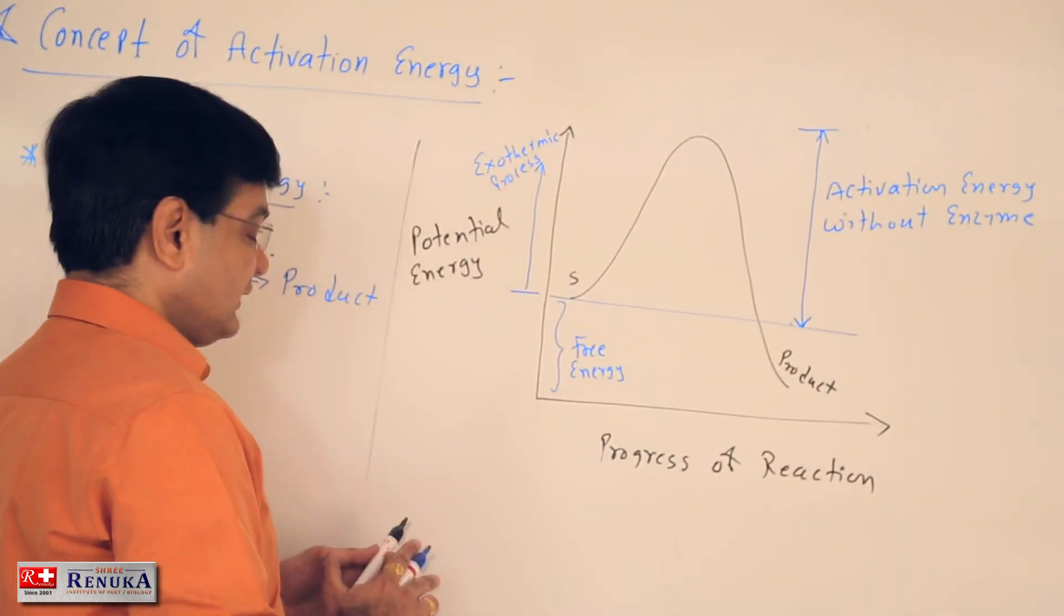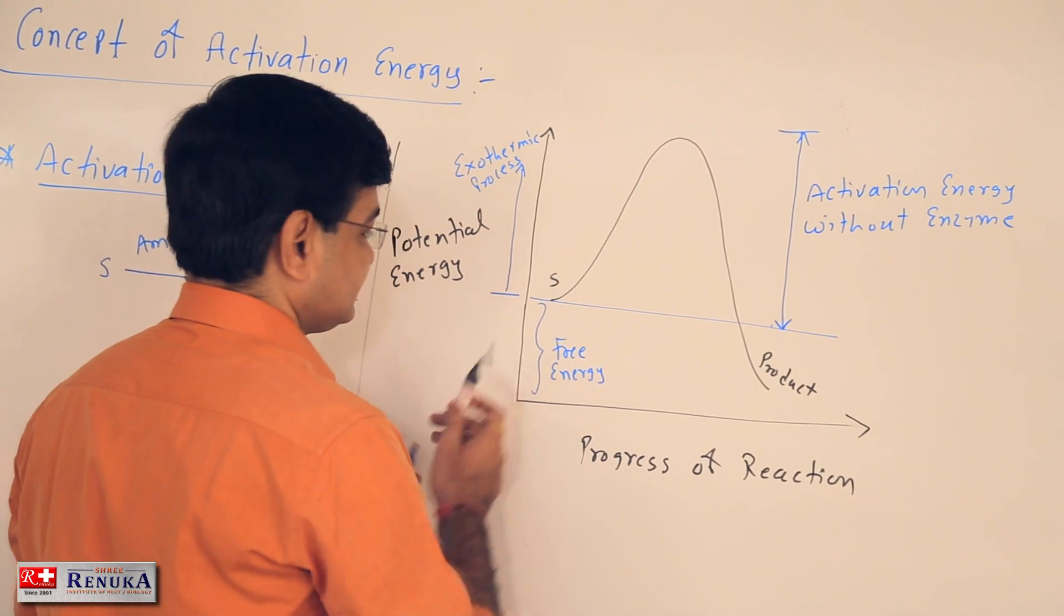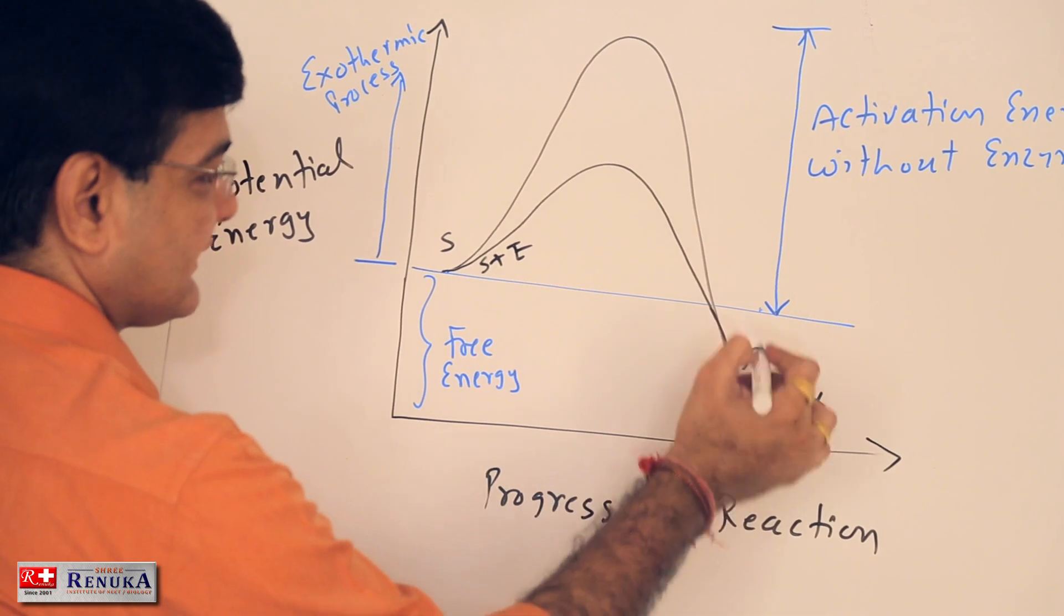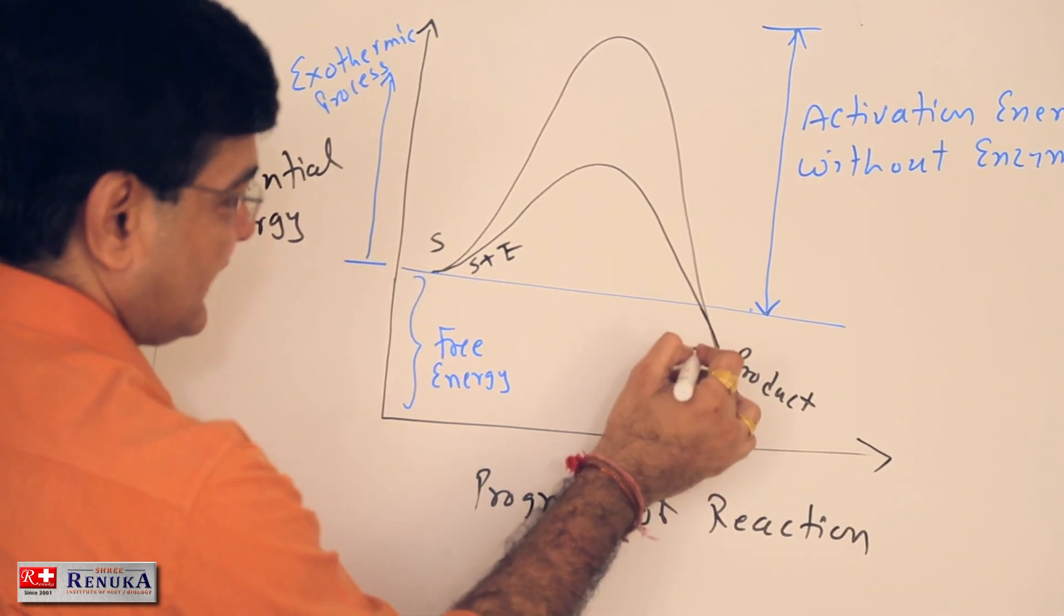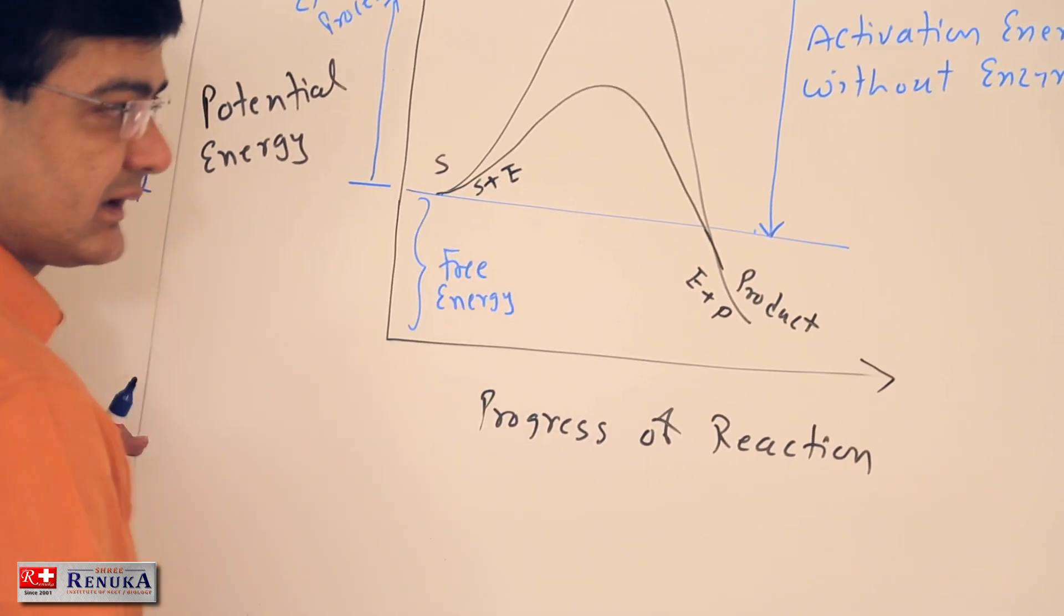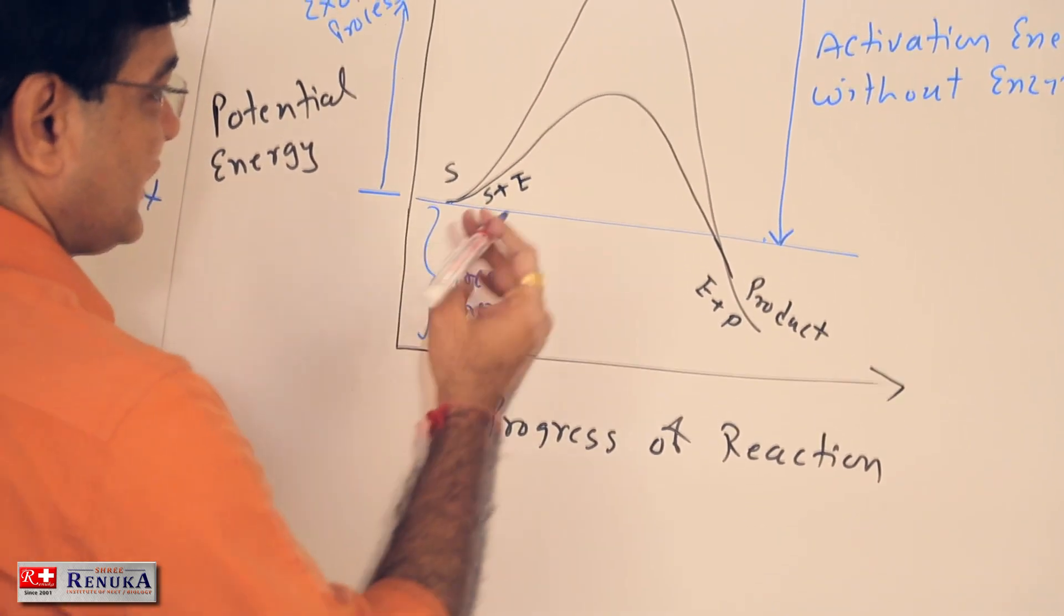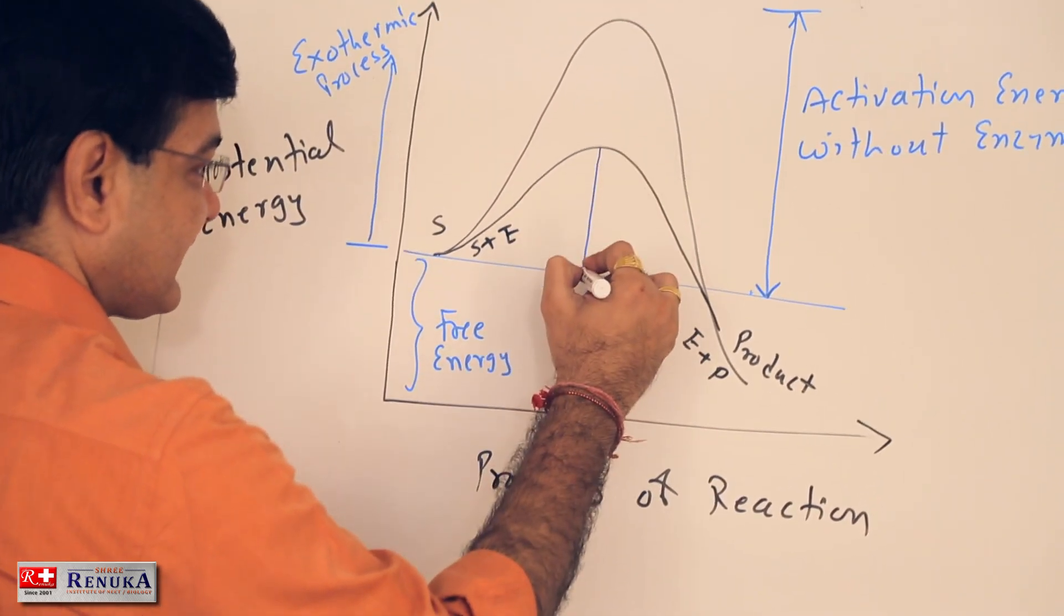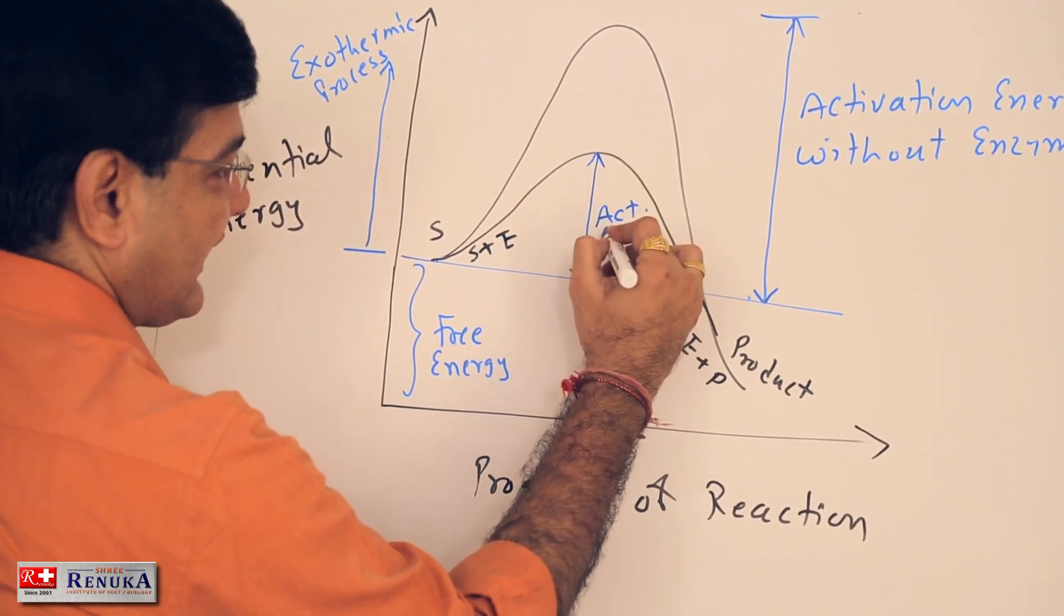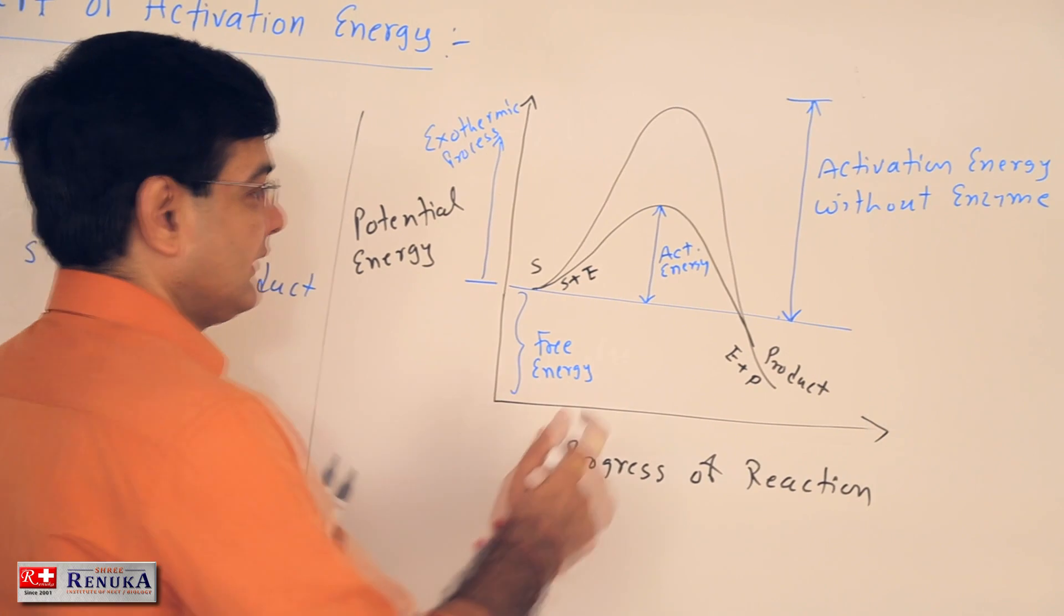Now, if we use the enzyme, that is SE convert into E plus P, E for enzyme over here. In such case, the amount of energy required decreases. So, again it is activation energy with the help of enzyme.